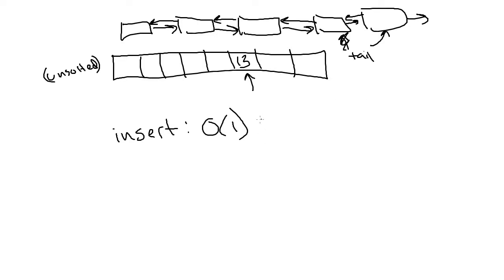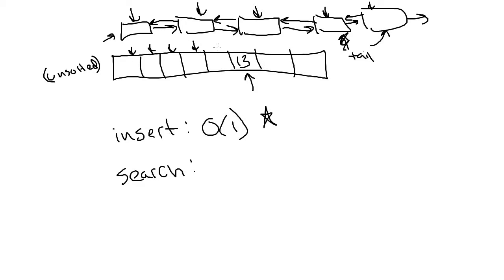Now we have to think about searching. For the linked list we have to start at one side and look at every single cell one by one. For the unsorted array the same is true — there's no order, so we can't expect the value to be in any particular spot. We have to search through the entire thing until we find it. That's O(N), which is not very efficient. Even though on average we'd find it about halfway through — roughly one-half N — we drop the coefficient in Big O analysis, so it's still O(N).